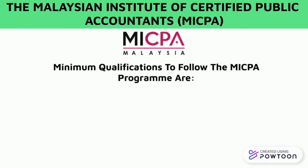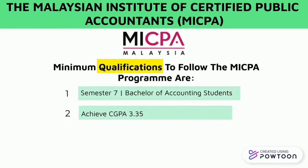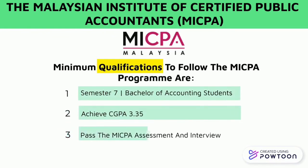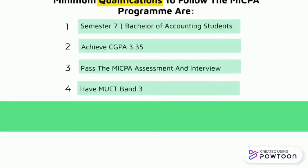The third professional paper is MICPA. In order to qualify to take this paper, you have to be a semester 7 student in the Bachelor of Accounting degree with a minimum GPA of 3.35. Other than that, you also need to pass the MICPA assessment and interview, as well as achieve the minimum professional examination requirements.